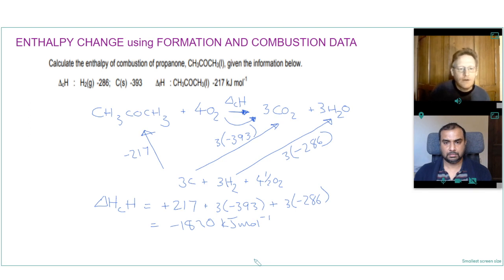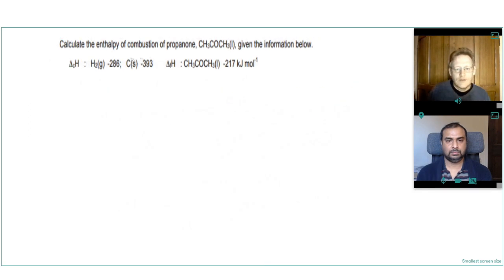So we'll have a look at another way of doing this. So this time, because we're given the enthalpy of formation of propanone, we can write the equation for the enthalpy of formation of propanone. So we form propanone from its elements in their standard states under standard conditions. And the elements here would be 3 carbons and 3 H2s and we'd also need half an oxygen.